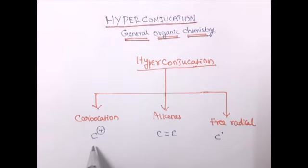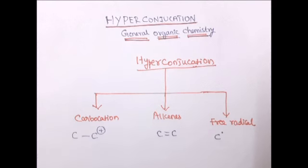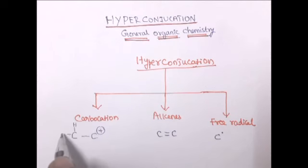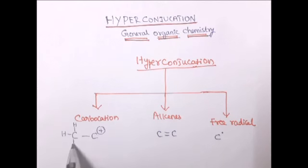Now, what is the condition for hyperconjugation to take place? To this Carbocation, an Sp3 hybridized Carbon should be attached — this is the necessary condition for hyperconjugation. So this Carbon must be Sp3 hybridized; if it is not there, hyperconjugation will not take place.